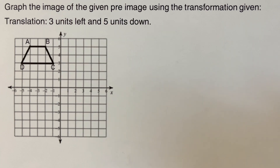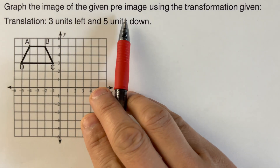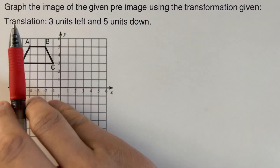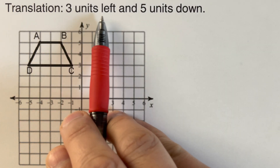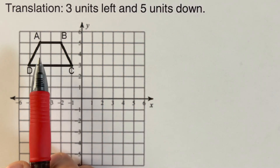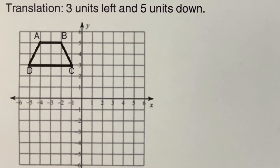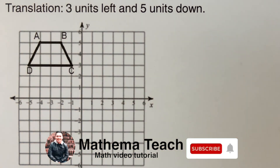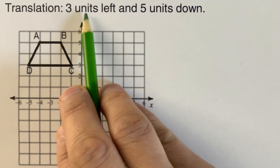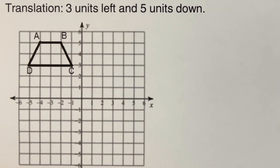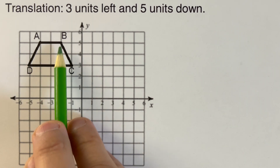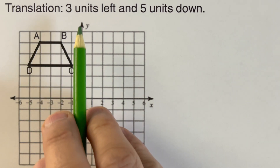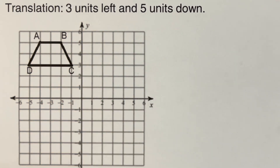Okay, so we go over the problem here. We're supposed to graph the image of the given pre-image using the transformation given. Translation: three units left and five units down. I'm just showing you another picture here — it doesn't have to be a triangle, it can be any shape. So this one right here is a trapezoid. The rule here is that we are going to translate it three units left and five units down, so each of these vertices of the trapezoid shall be moved three left and five down.